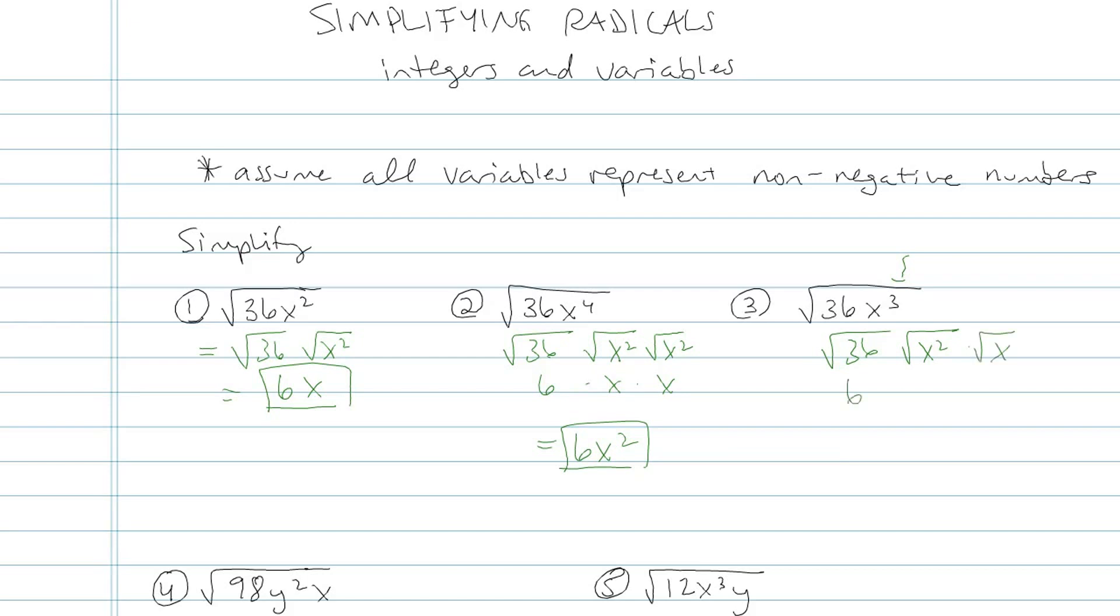What's going to happen is I'll have 6 times x. And then square root of x cannot be simplified. My final result looks like this.